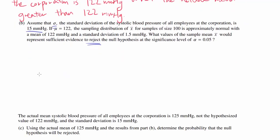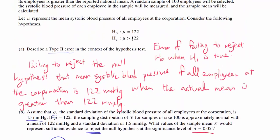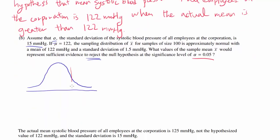We want to find which values of the sample mean represent sufficient evidence to reject. Since alpha is 0.05 and we're testing whether mu is greater than 122, it's a right-tailed test. We're going to reject when values fall into the area to the right with area 0.05 — that is, when the sample mean is greater than the critical value at 0.05.